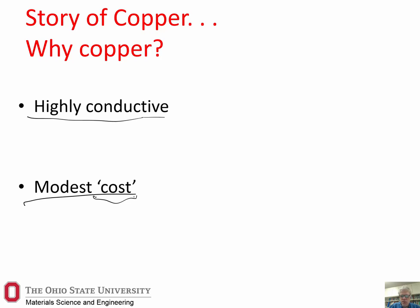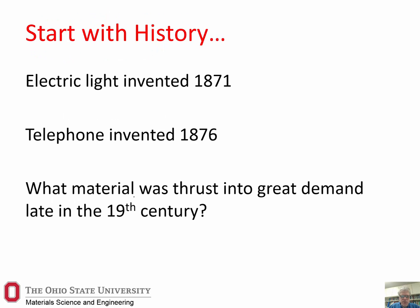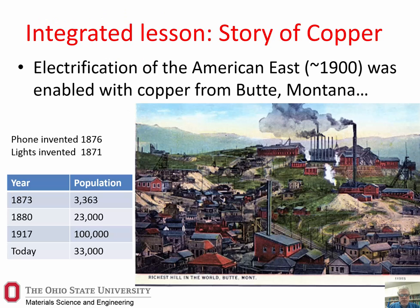Copper is also modest cost — and I have those words in quotes for a reason, because we really have to understand what happens when we make copper. Back around the end of the 19th century, in the 1870s, it was found out that probably the richest copper deposits still in North America were in Butte, Montana. Butte had a population of about 3,000 people in about 1873; just seven years later it grew to about 23,000, and a few years after that up around 100,000. Today Butte is back down around 3,300 people.